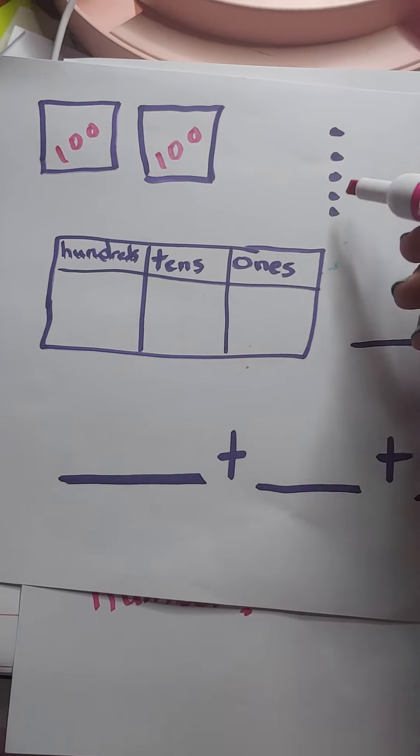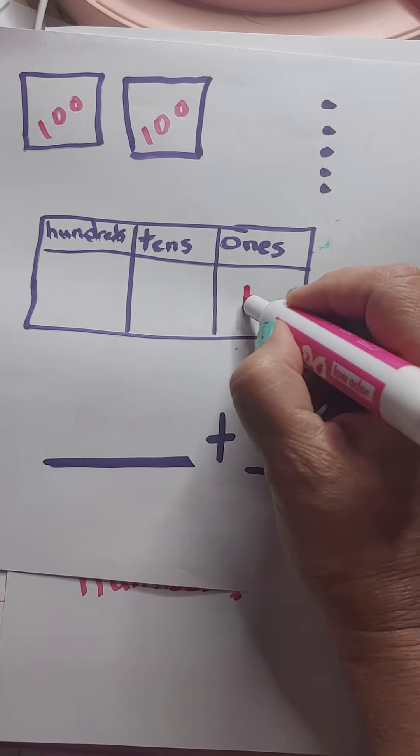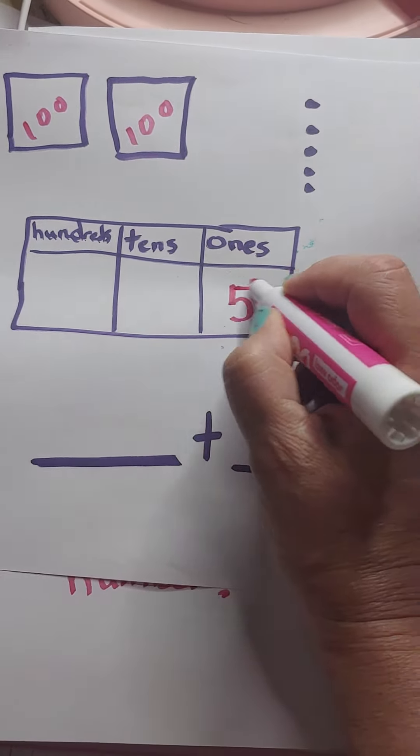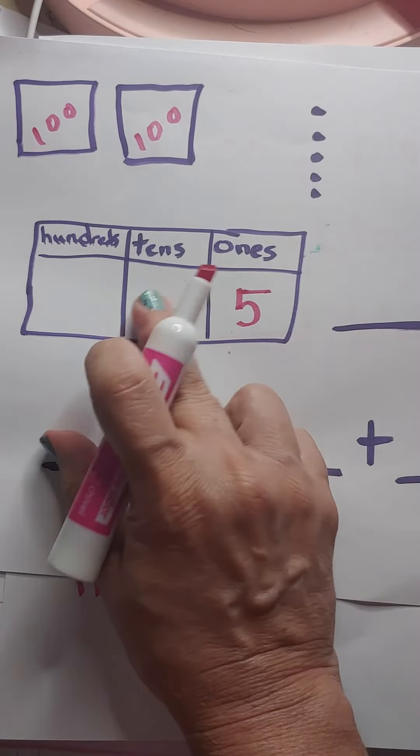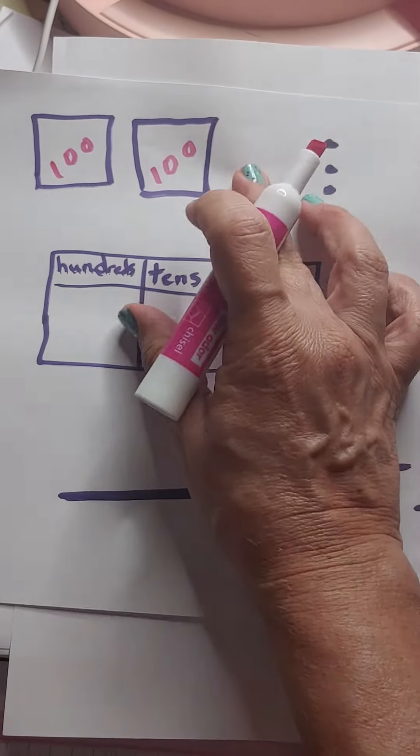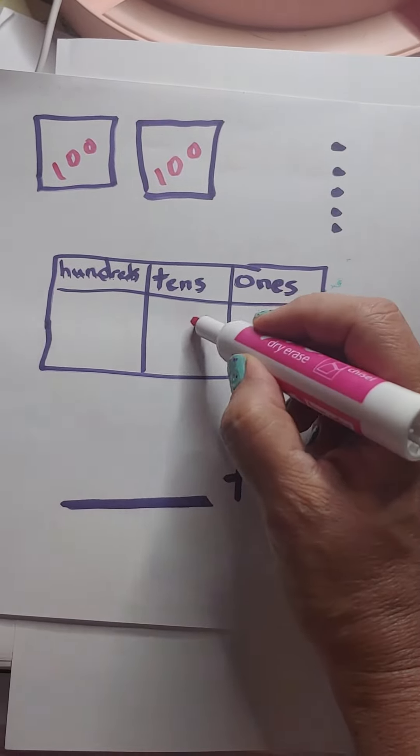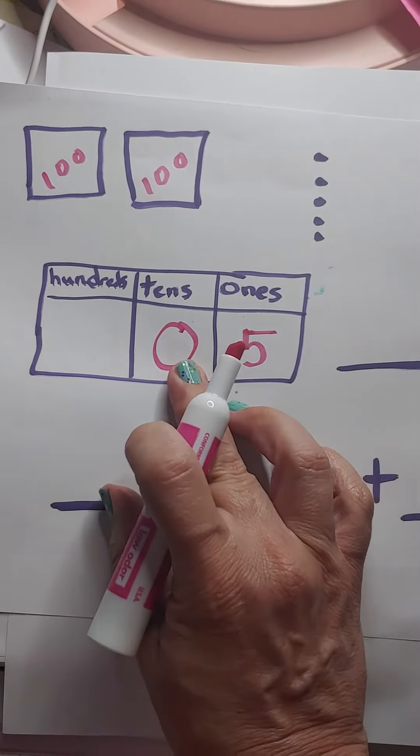How many ones are there? One, two, three, four, five. Now tens. In the tens place, how many tens are there? Well, there's none. So we're going to put a zero. You have to put a zero there.